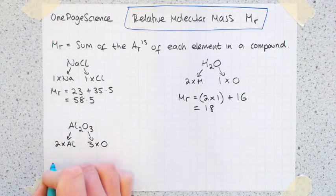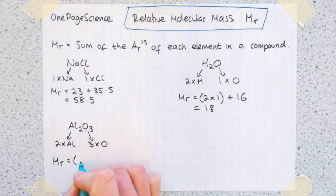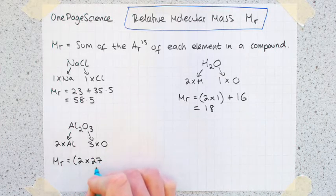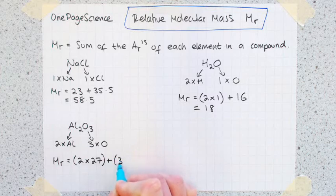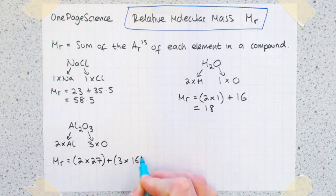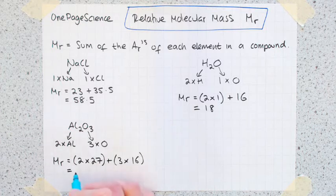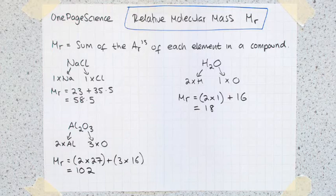You then again grab your periodic table, look at the values. So the MR for aluminium oxide is two times 27, so that's what you'd have looked up from the periodic table, plus three times 16. Put that straight into your calculator, write it out into your exam script, and you come out with a value of 102.